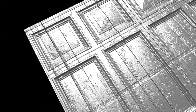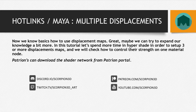Great, so now we have some knowledge about the displacement maps. Maybe we can try to expand our knowledge a bit more. In this tutorial, I will spend more time in Hypershade in order to set up three or more displacement maps. And we will check how to control their strength on the material node. So first of all, I will prepare a scene for testing displacement maps, and we'll move to Hypershade in order to show how to connect multi-displacement maps to one material.